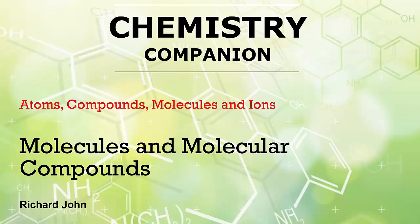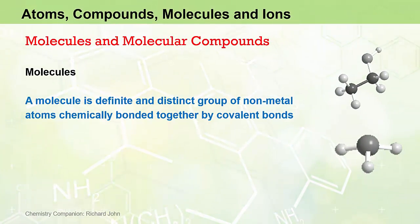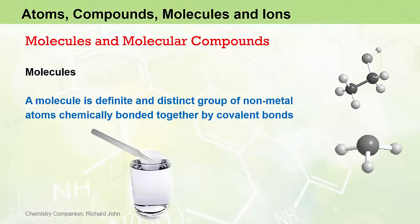In this video, we look at molecules and molecular compounds in more detail. We'll start by reminding ourselves that a molecule is a definite and distinct group of non-metal atoms chemically bonded together by covalent bonds. If we were able to use a microscopic pair of tweezers on the atomic scale, we would be able to pluck out a single definite and discrete water molecule from a glass of water. This is not the case for ionic compounds where no discrete molecules exist.